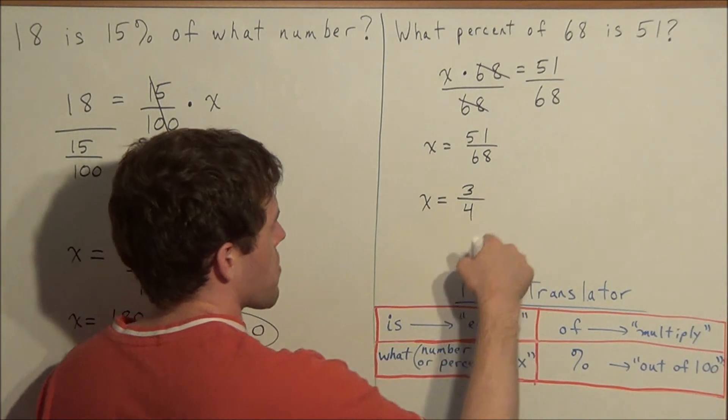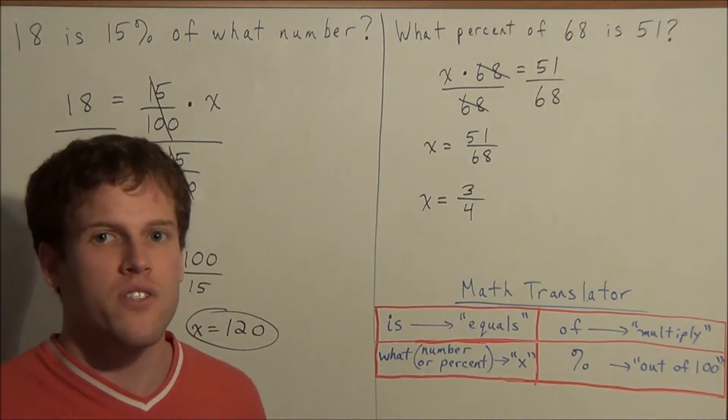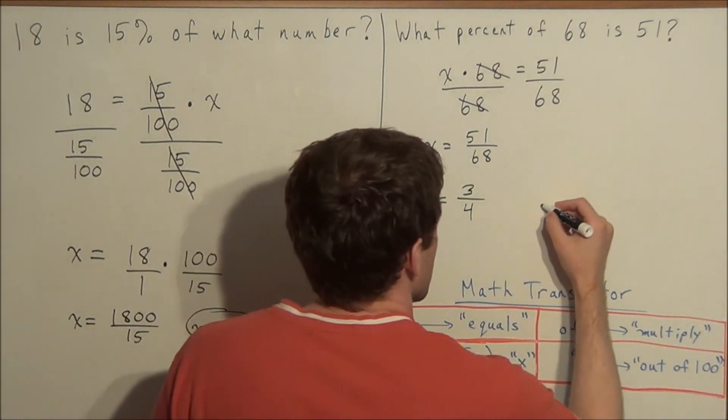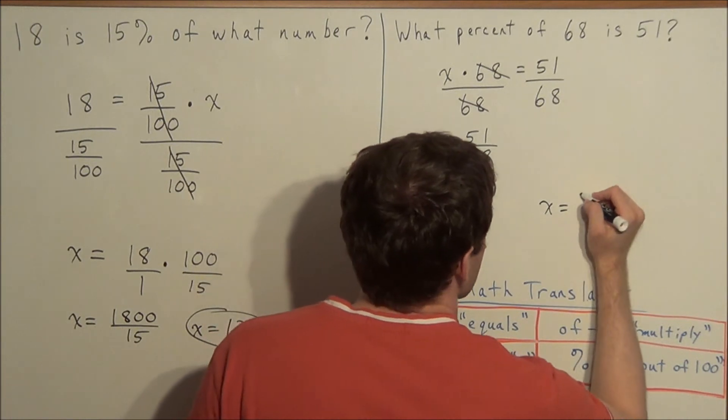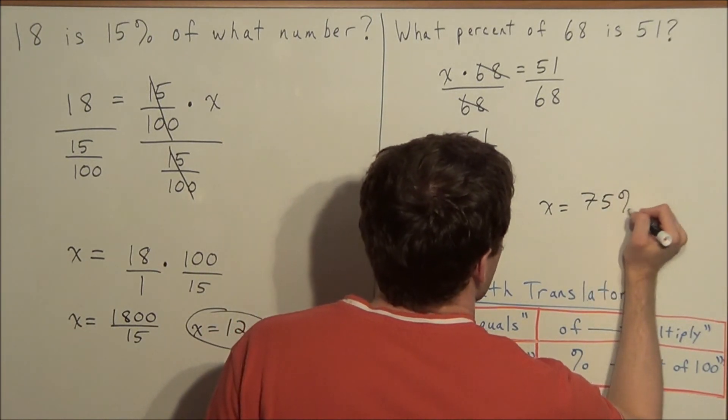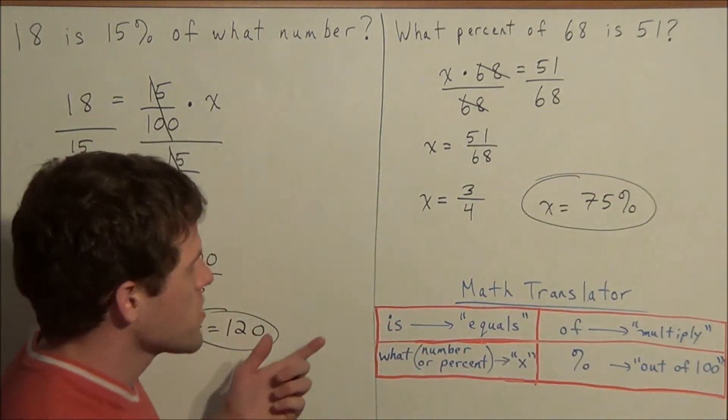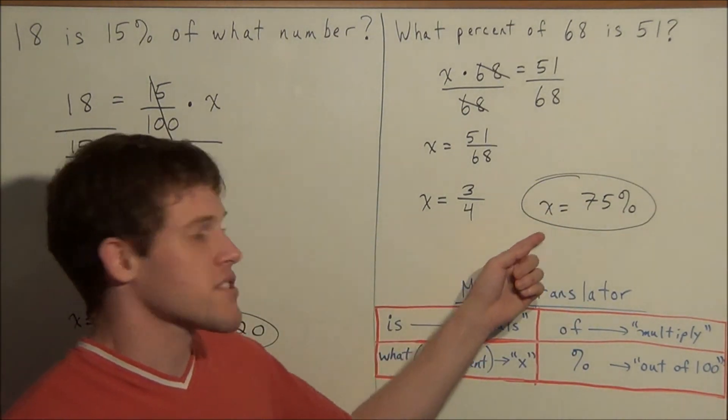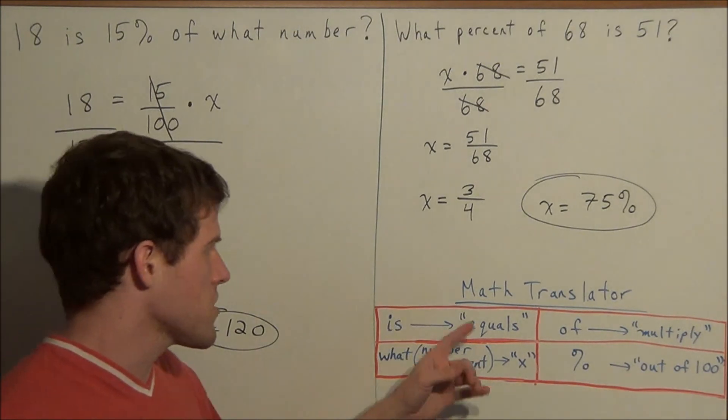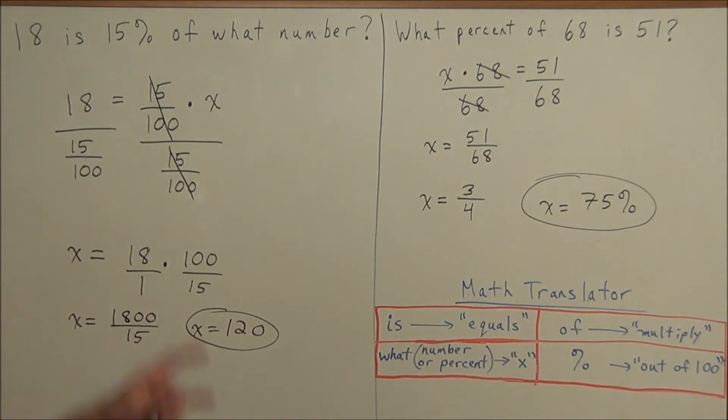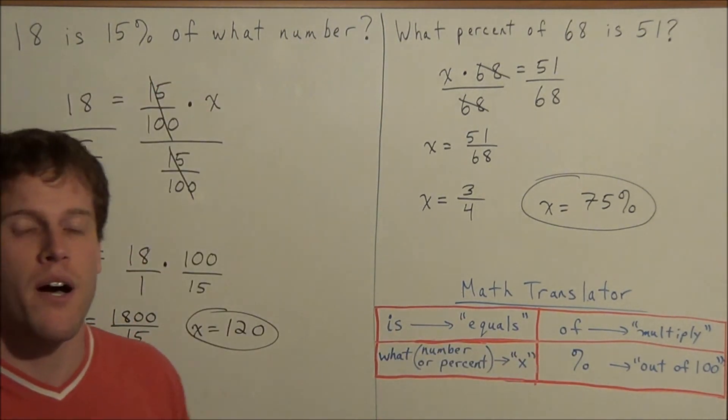So this fraction will reduce to 3 fourths. And now 3 fourths as a percent is simply 75%. You could think that 3 quarters is equal to 75 cents, which would translate in terms of percent as 75%. So this is how we could use the math translator to answer these two percent problems.